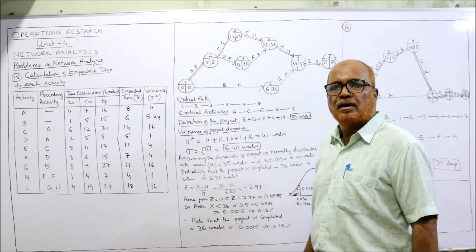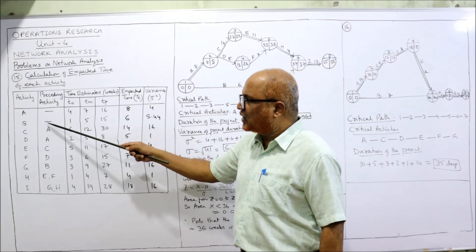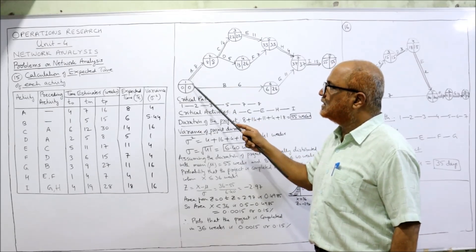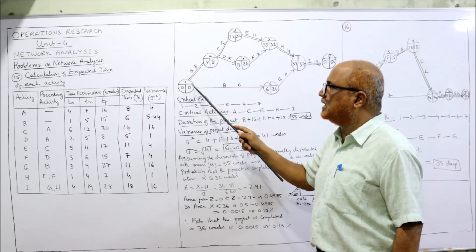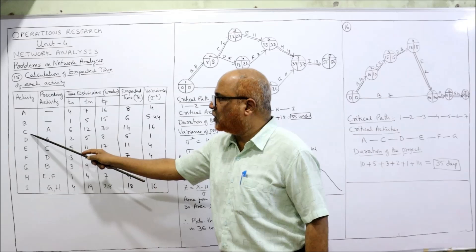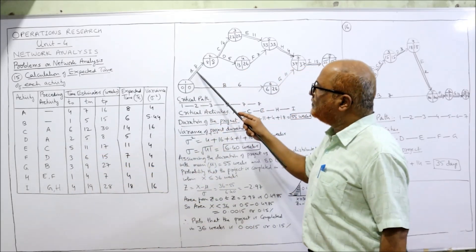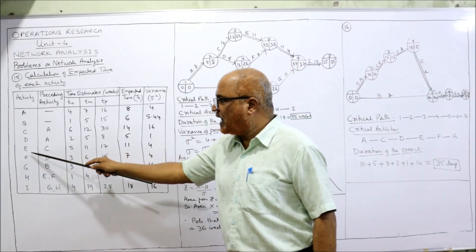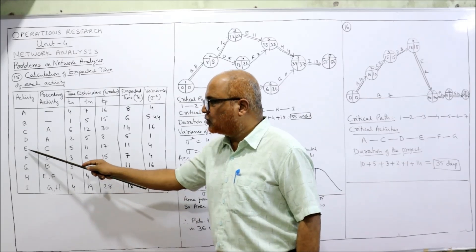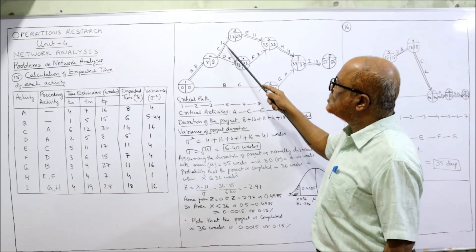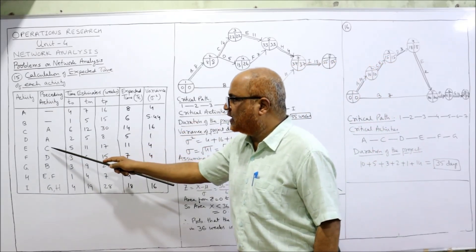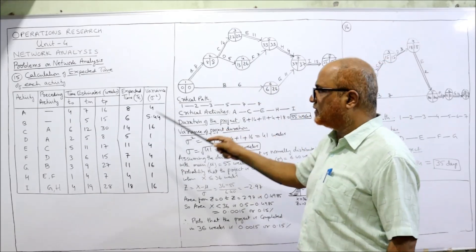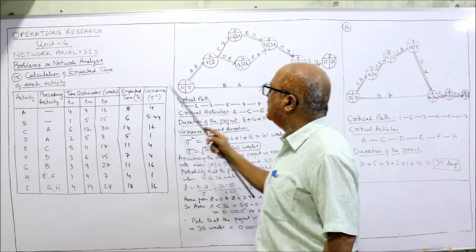Now we start drawing the network diagram. There is no predecessor for A and B, so both activities start from the beginning at event 1. Activity A goes from event 1, activity B also from event 1 — A and B start simultaneously. Then C follows after A and D follows after A, so after A two activities follow: C and D. E follows after C and F follows after D.